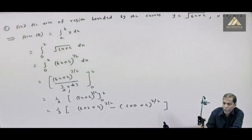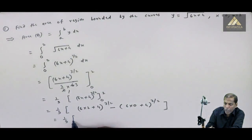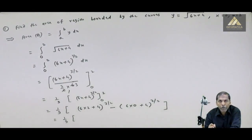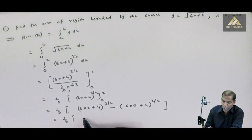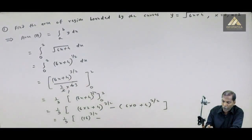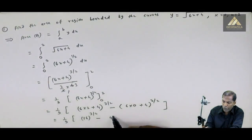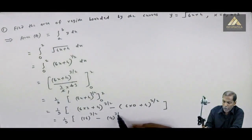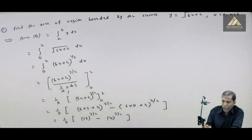अब हम replace करेंगे x की जगह पे lower limit, that is x को हम replace करेंगे 0 से. तो हमें क्या मिलेगा: 6 into 0 plus 4, bracket complete, raised to 3/2. और इसके बाद square bracket totally complete.